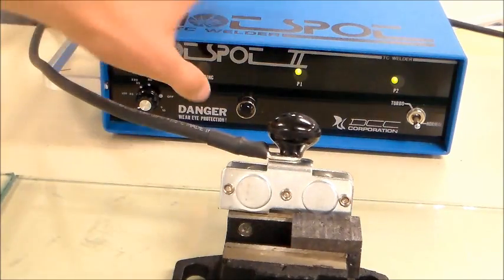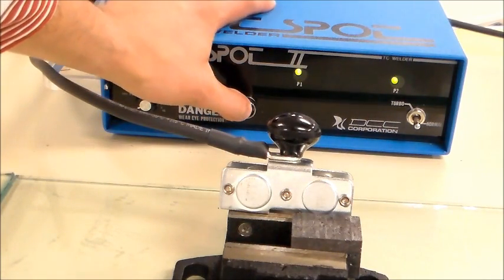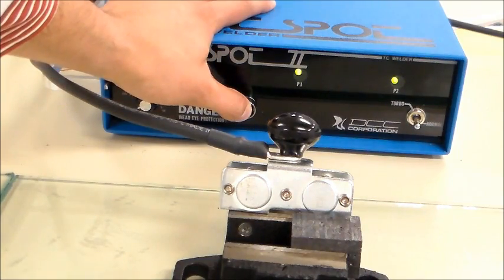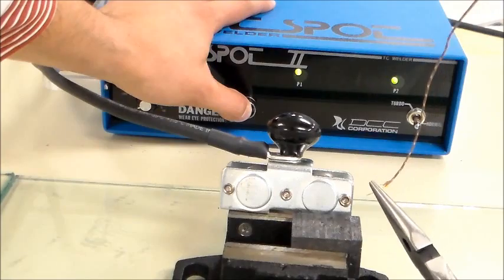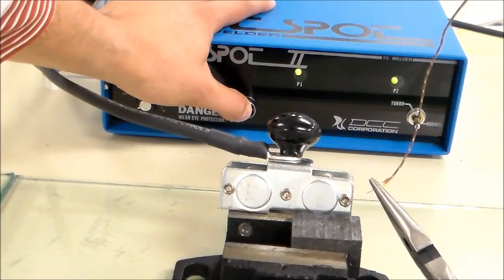Then press the trigger button and touch the carbon block with the exposed thermocouple wire ends. This will create the welding. Be careful with the sparks.